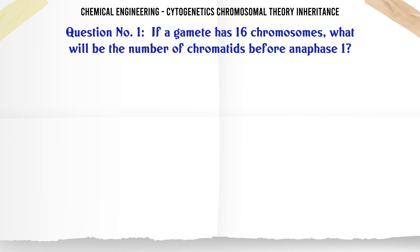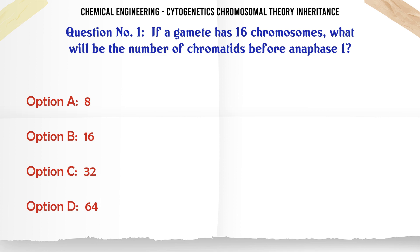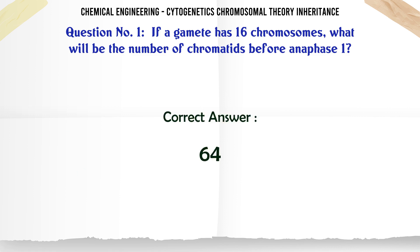If a gamete has 16 chromosomes, what will be the number of chromatids before anaphase 1? A: 8. B: 16. C: 32. D: 64. The correct answer is 64.